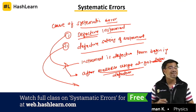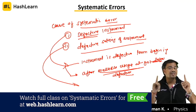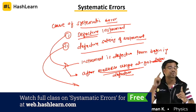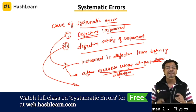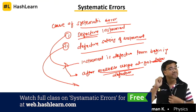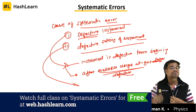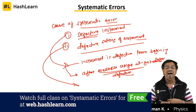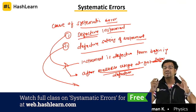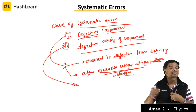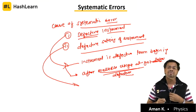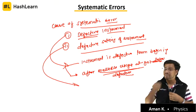Now you can understand what is systematic error. Because of the instrument, this type of error can be of two types: either it is because of defective setting of instrument or defective instrument. And defective instrument also can be of two types: either it got defective after multiple uses or it got defective from the beginning, from the manufacturing.